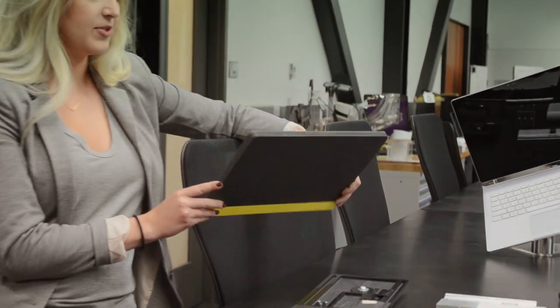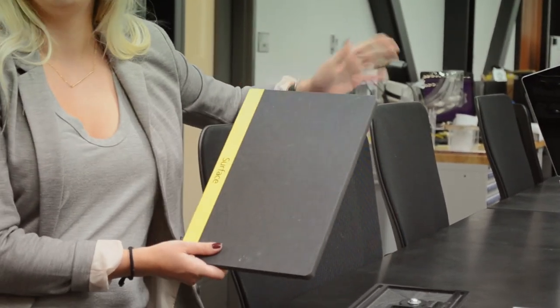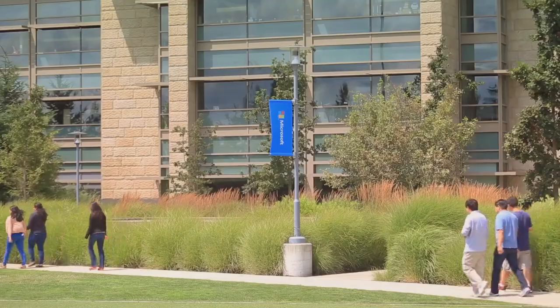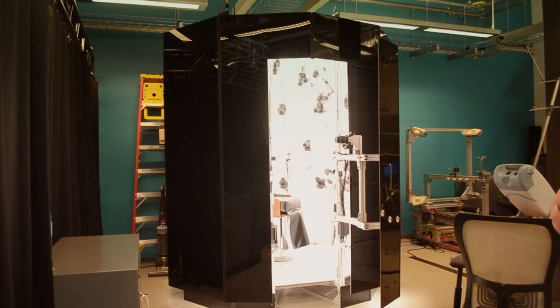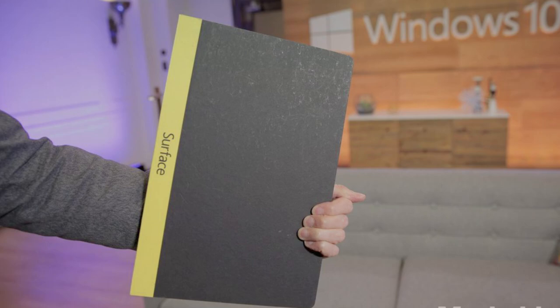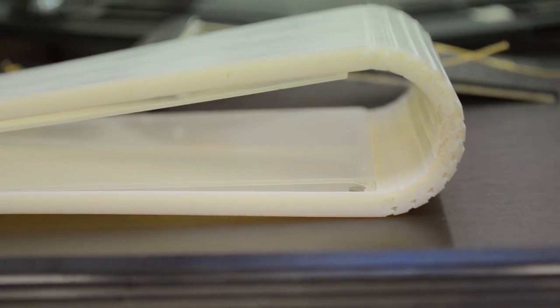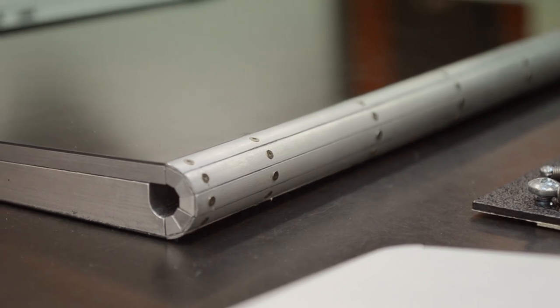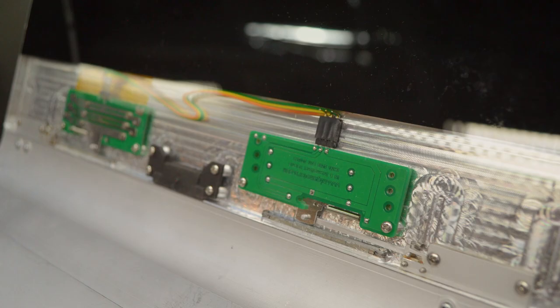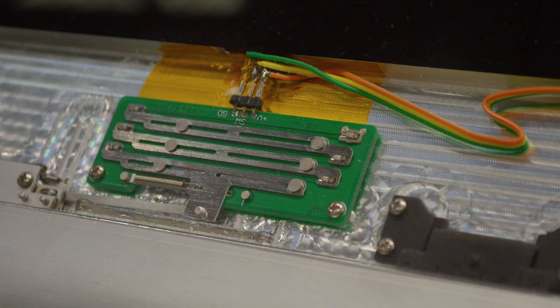The design process of the Surface Book began with a cardboard cutout. And thanks to the 10,000 square foot rapid prototyping lab on Microsoft's Redmond campus, the team was able to iterate designs in just a day. After the cardboard cutout, which they simply referred to as Book, they printed concepts with a 3D printer, then moved on to machined versions, and we even got to see the first working muscle wire detach mechanism prototype.